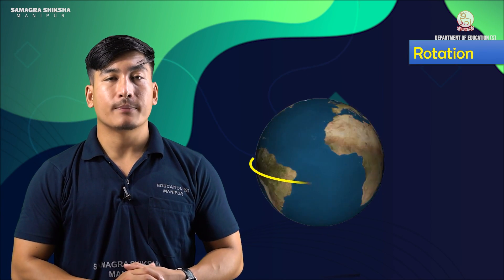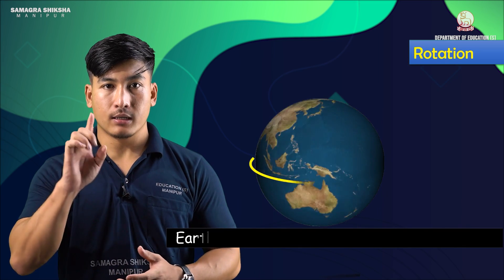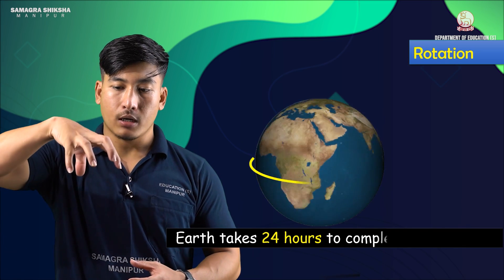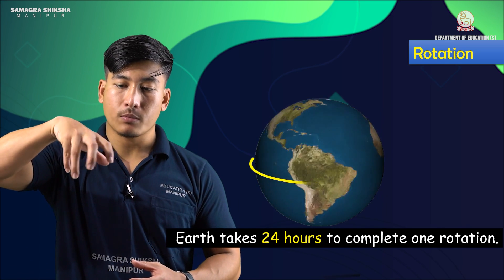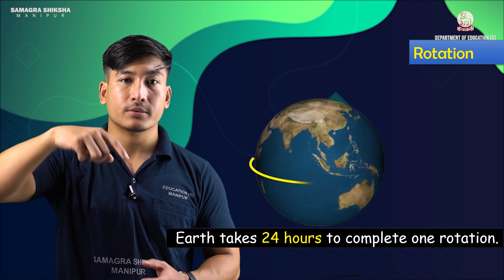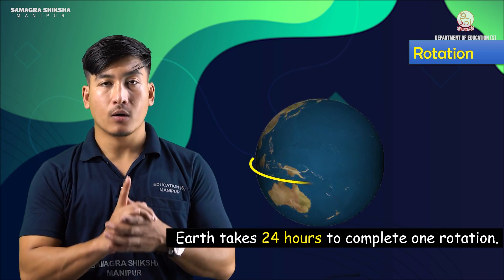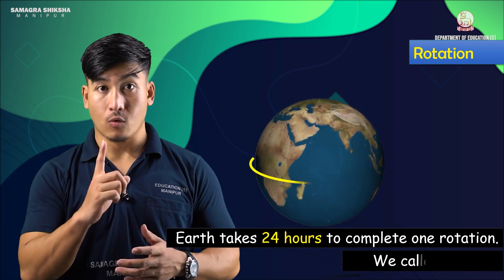The earth takes 24 hours to complete one rotation. We call it one day.